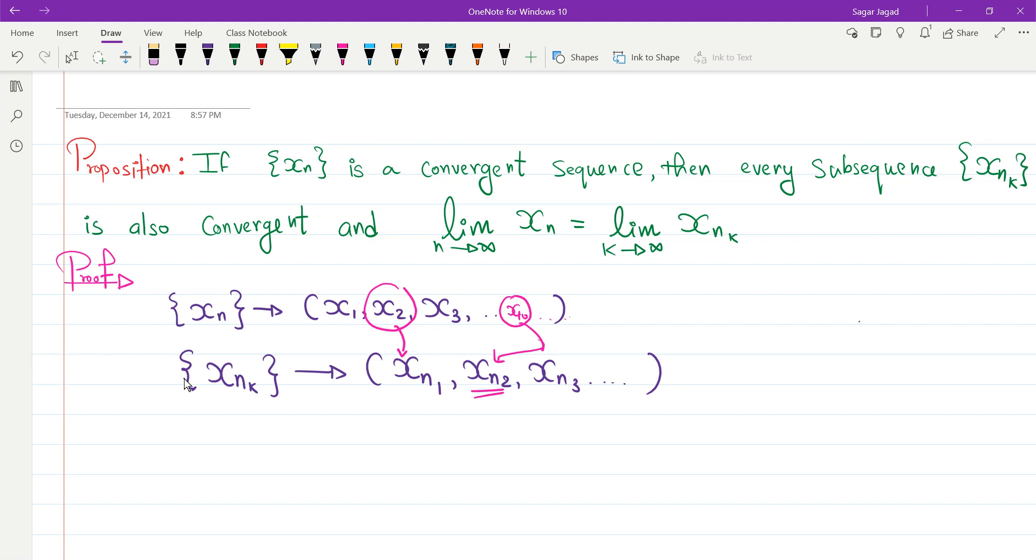While creating a subsequence, we consider the indices to be in an increasing order. That means my n1 is strictly less than n2, and this is strictly less than n3, and so on. What we observe is, suppose if I consider xn1, then this value of n1 could be equal to 1 or it would be something greater than 1.